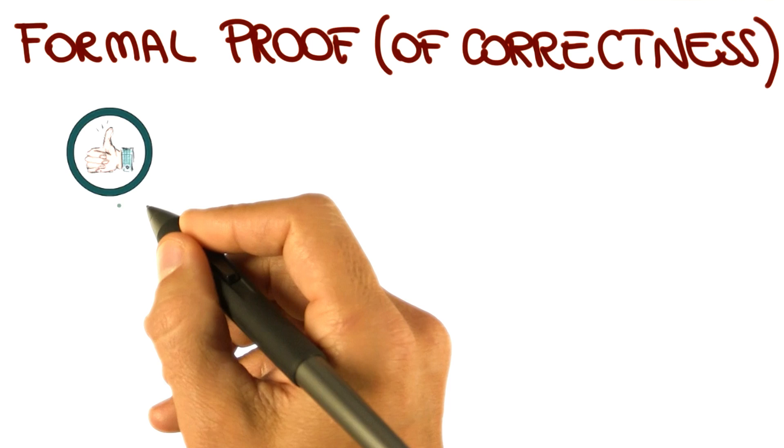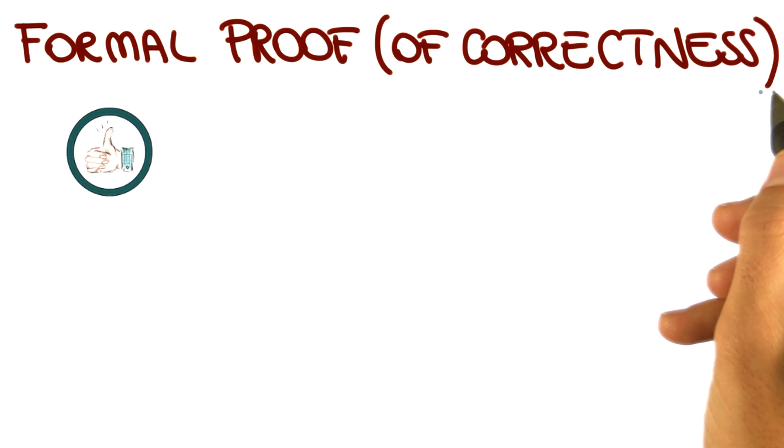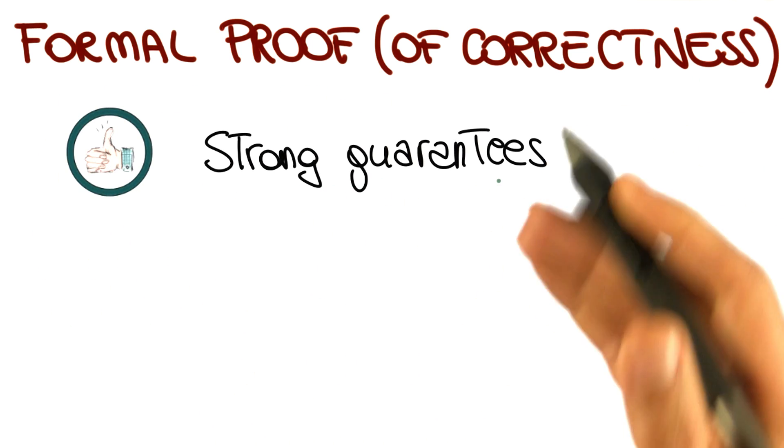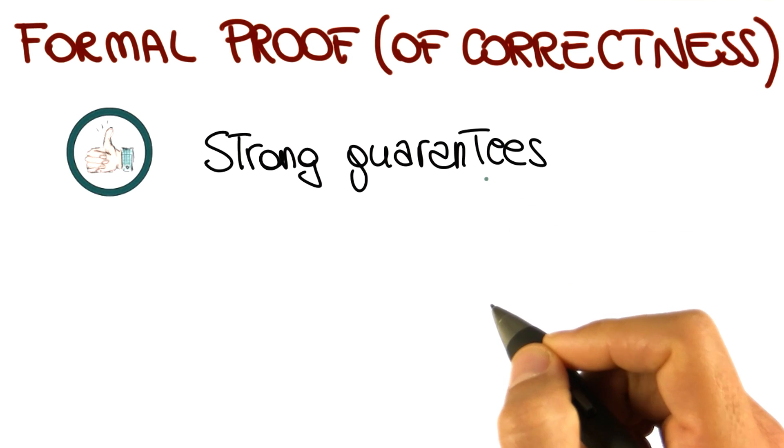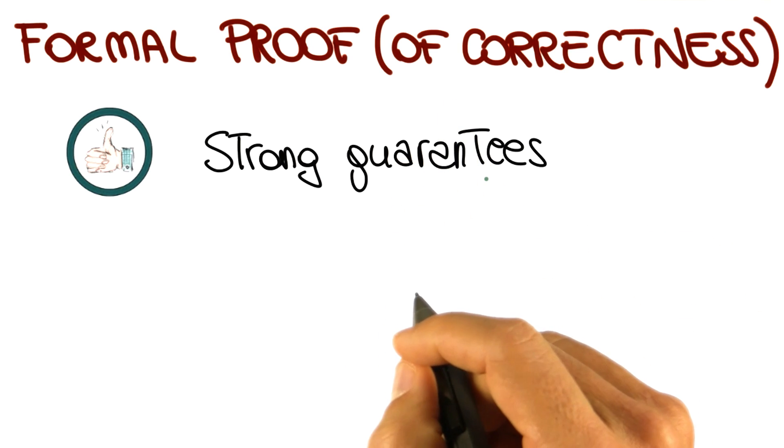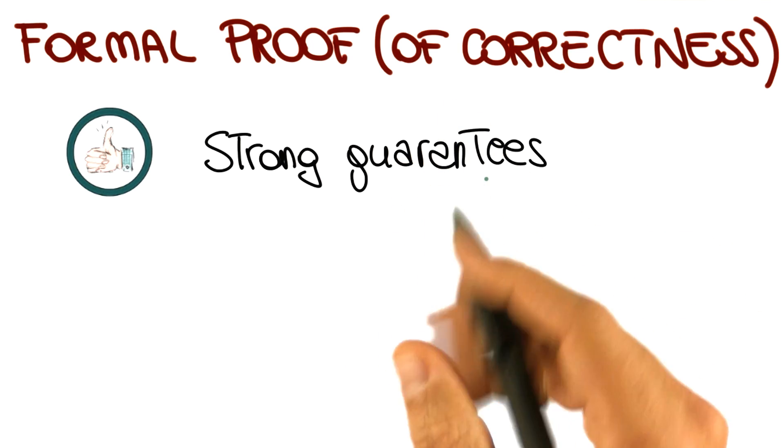Finally, the main pro about formal proofs of correctness is that they provide strong guarantees. So they can guarantee that the program is correct, which is not something that any of the other approaches can do, including static verification.